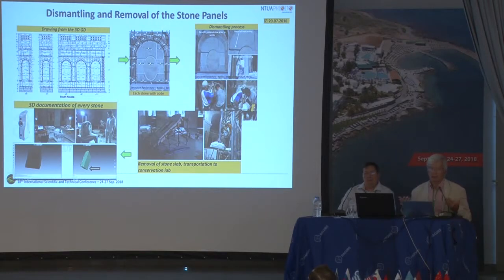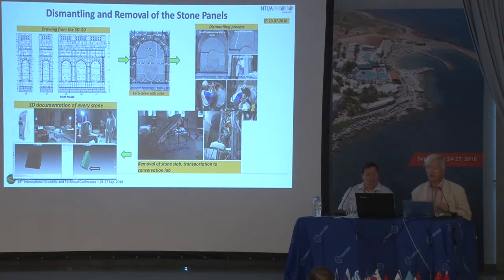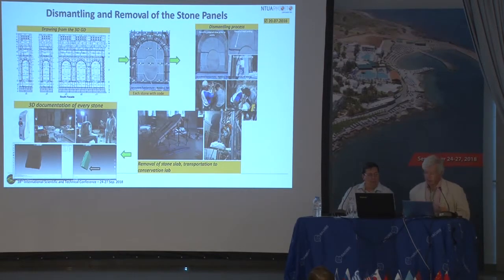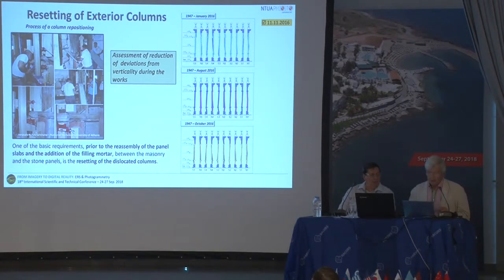From the 3D model we produced, we then produced some 2D products. We produced a 3D model and then either orthophotos or line drawings, depending on what was needed. You can see the line drawings where every stone, every slab was numbered with a code. Each stone was taken out, taken to a lab, scanned with a handheld scanner, cleaned, and prepared to be put back again.